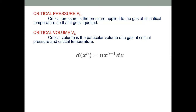Before we go to determining the critical constants, we need to know the basics of differentiation. If you want to differentiate a variable x power n, the formula goes like this: d of x power n is given by n times x to the power n minus 1, where the power diminishes by 1, into dx.